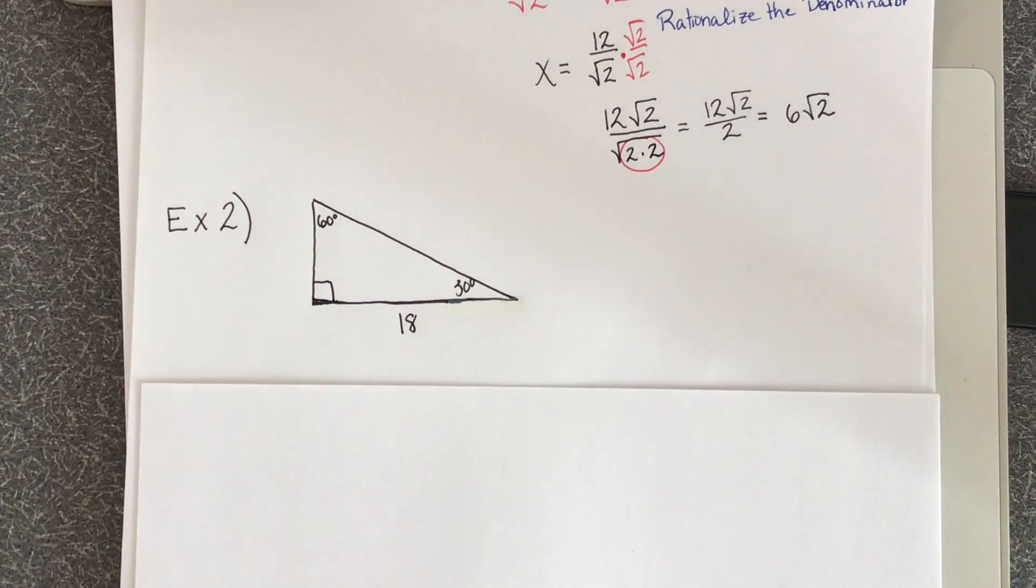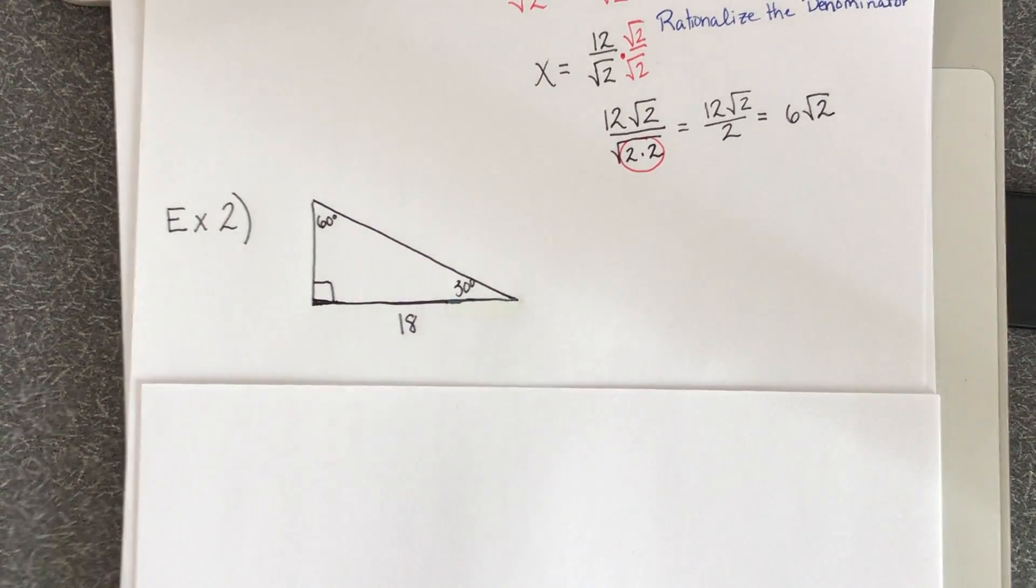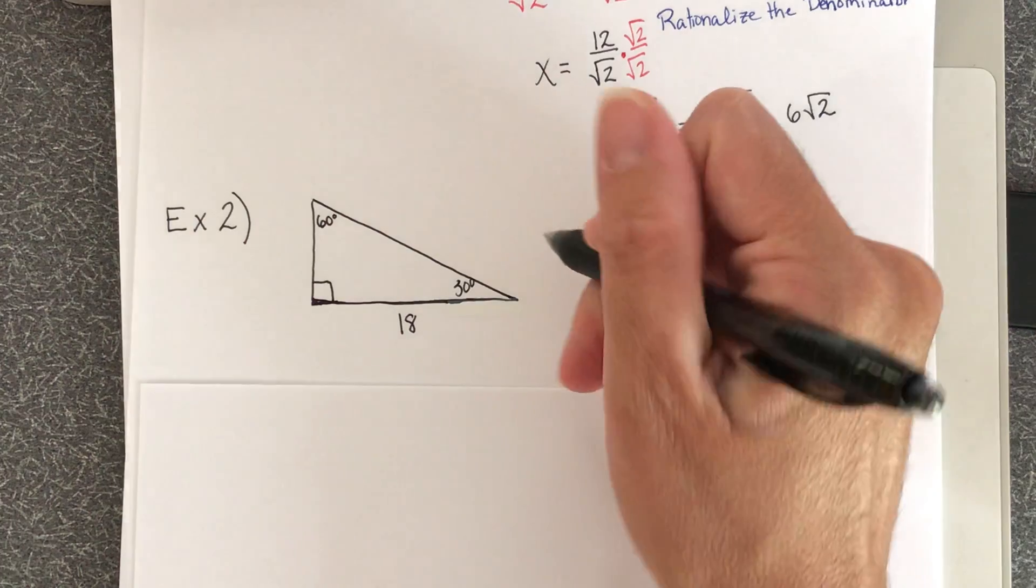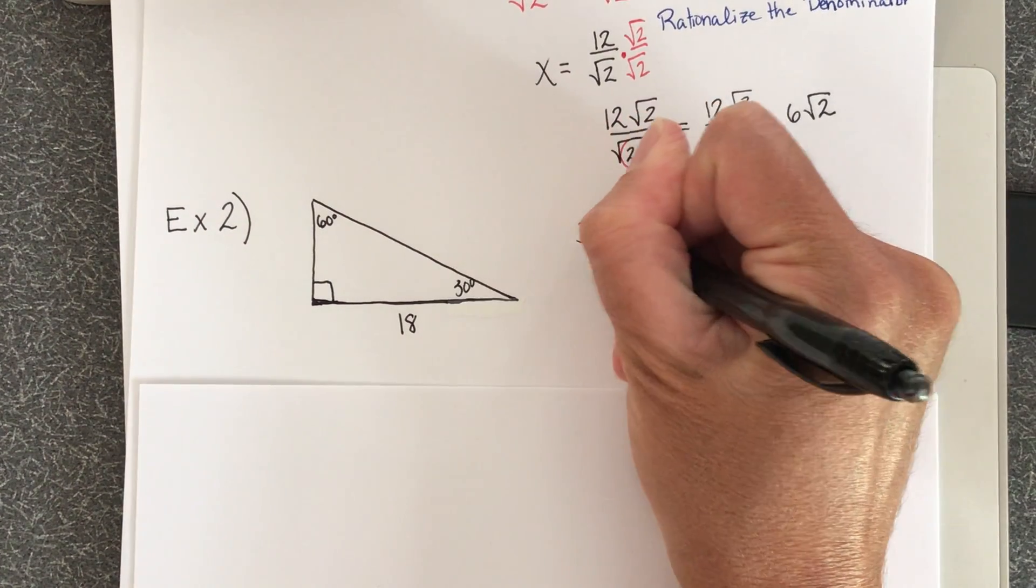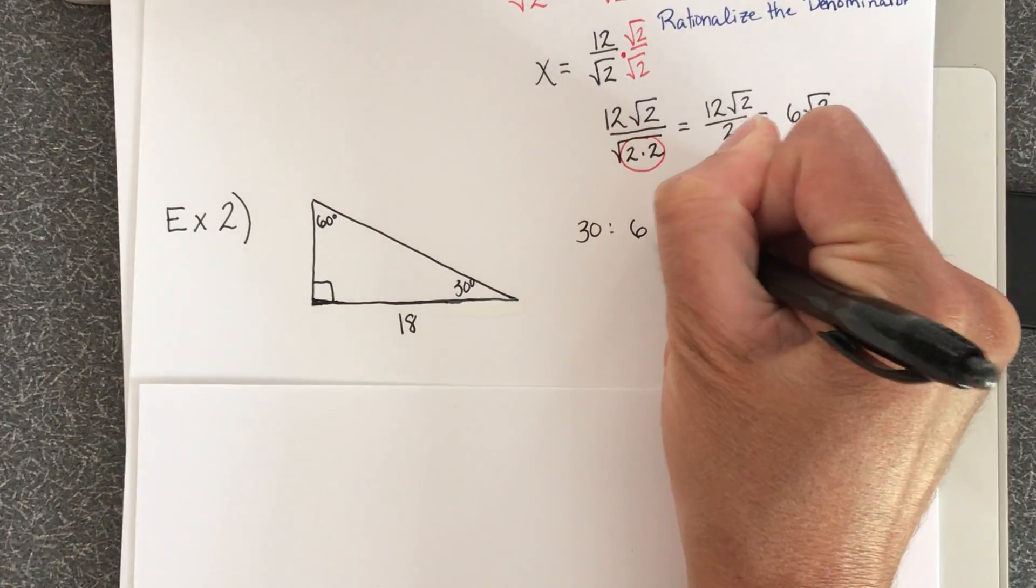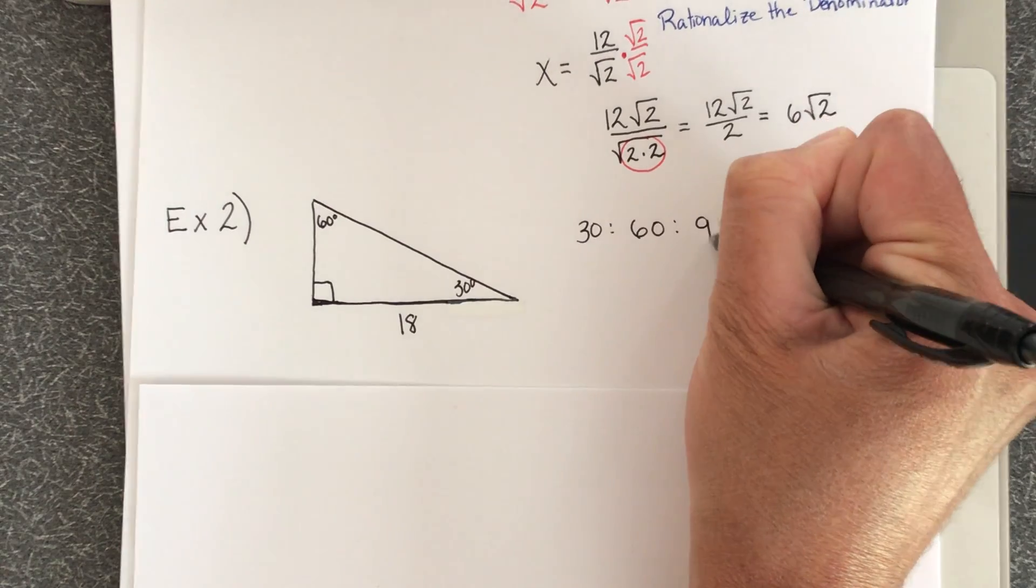And so now I'm going to find the length of my missing sides. So the very first thing I want to do is write down my ratio of my angles: 30, 60, 90.